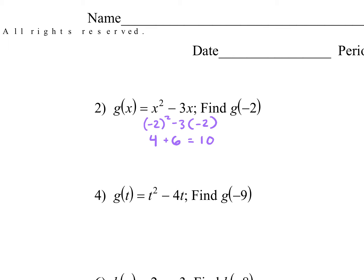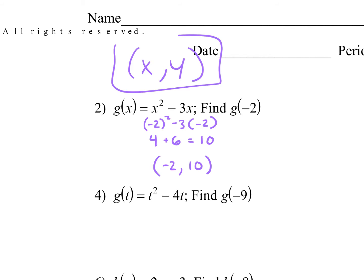For these questions, you have to write your answer as a point. So what did I plug in for x? Negative 2. And what did I get as my answer? 10. So remember, x comes before y — just like x comes before y in the alphabet. You always write your x first, then your y. So that's our answer.